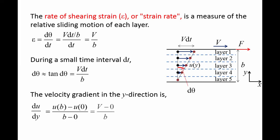The velocity at y equals h is capital V, and the velocity at y equals 0 is 0. So the velocity gradient is equal to v divided by h, which is also equal to the rate of the shearing strain.